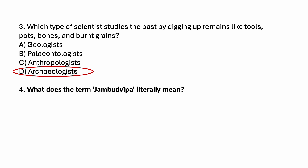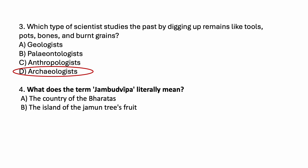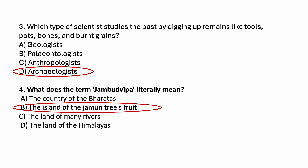What does the term Jambudvipa literally mean? Options are: the country of the Baradas, the island of the Jamun trees' fruit, the land of many rivers, the land of the Himalayas. The correct answer is option B — the island of the Jamun trees' fruit.